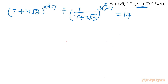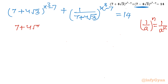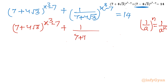Now I will split the power using the property of exponents. We can write 1 over a to the power n as a^(−n). So here we will be writing (7 + 4√3)^(x³ - 7) plus 1 over (7 + 4√3) whole power (x³ - 7).